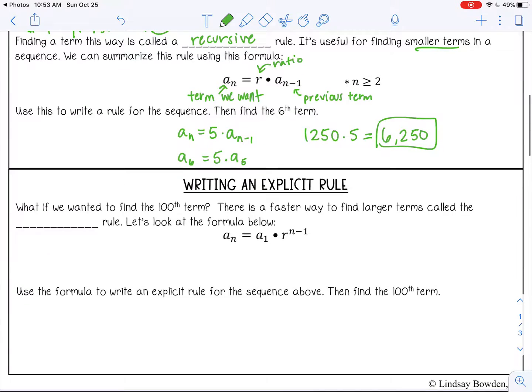Okay, so what if we want to find the 100th term? We don't want to use recursive because that's going to take forever. So there's a faster way to find larger terms called the explicit rule. And the formula is a_n, that's the term we want, equals a_1, that's the first term in the sequence, times r, that's our ratio, to the power of (n-1). And then n is the term number we want, so like 100.